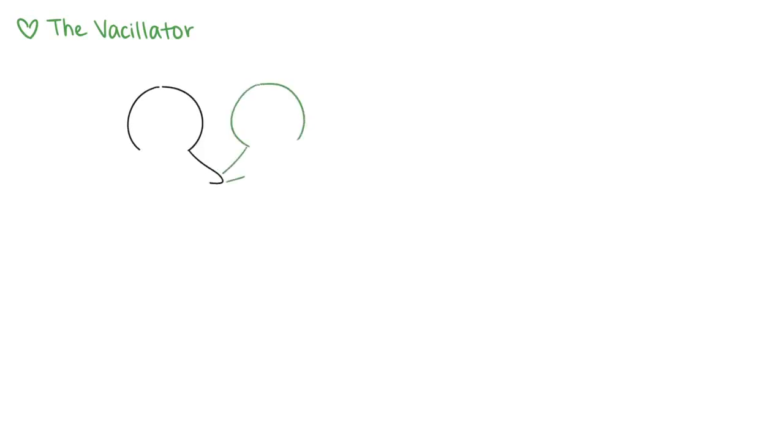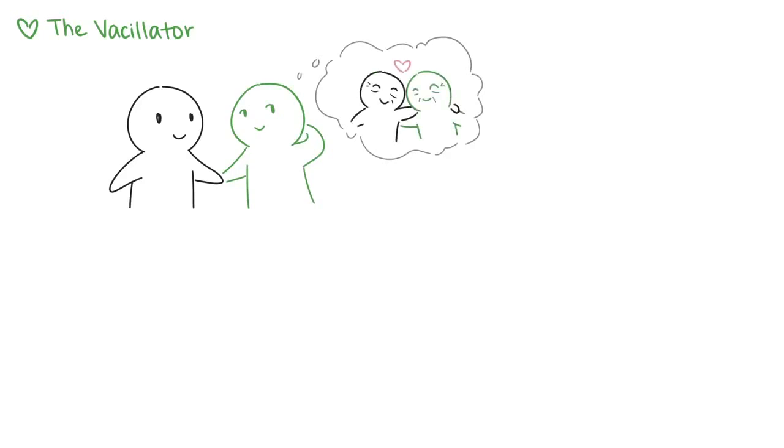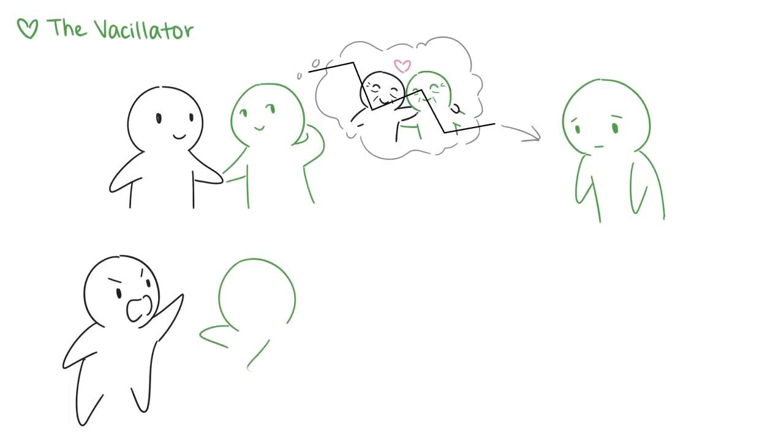Vacillators have a tendency to idealize new relationships. But once they feel let down or disappointed, they grow dejected and doubtful. They often feel misunderstood and experience a lot of internal conflict and emotional stress within their relationships. They can be extremely sensitive and perceptive, which allows them to detect even the slightest change in others, and know when people are pulling away.